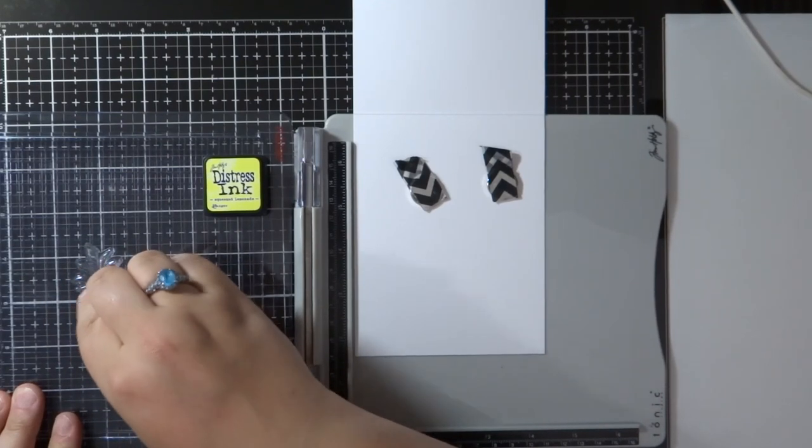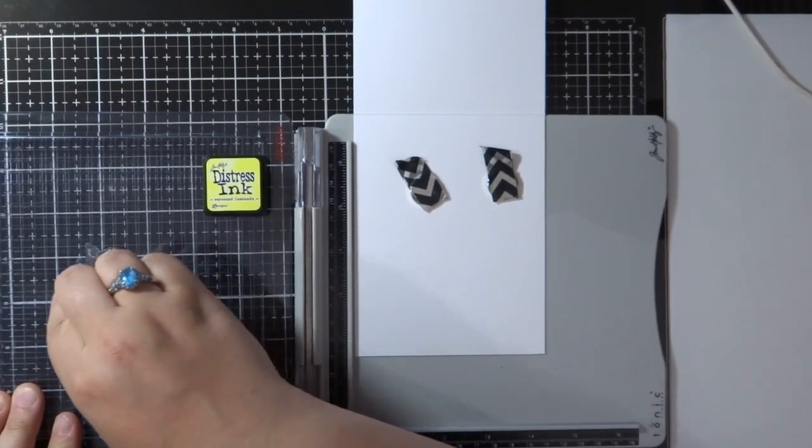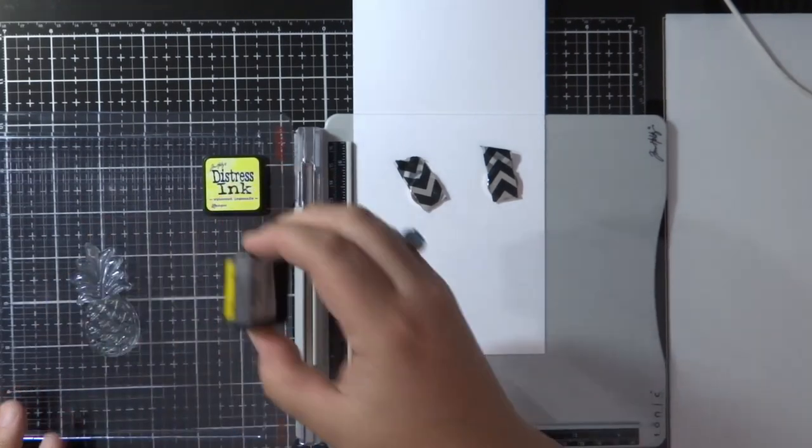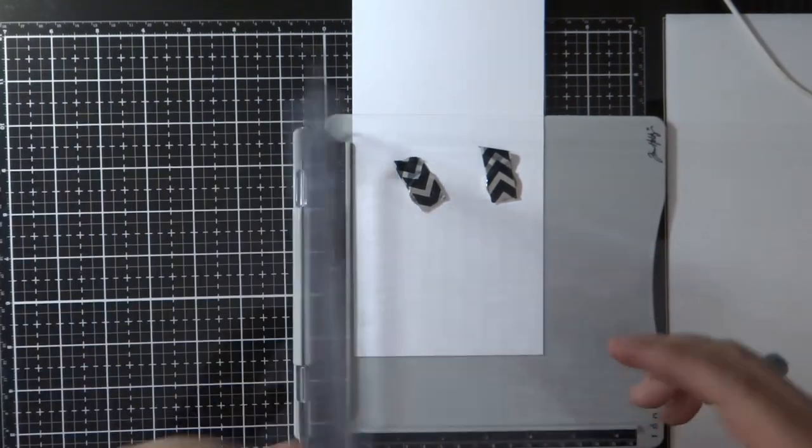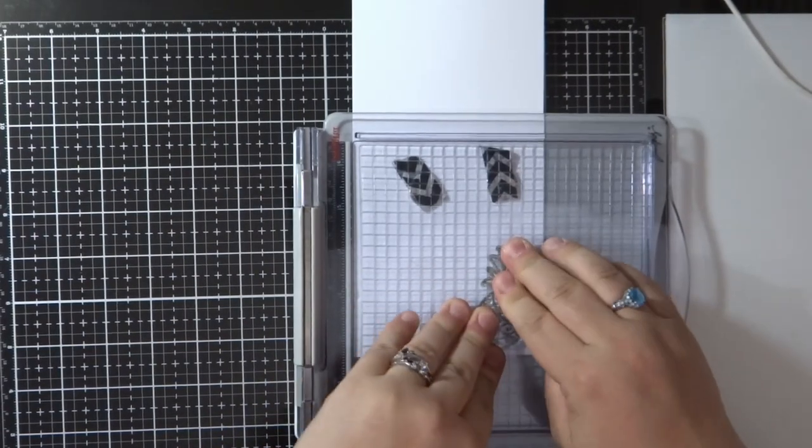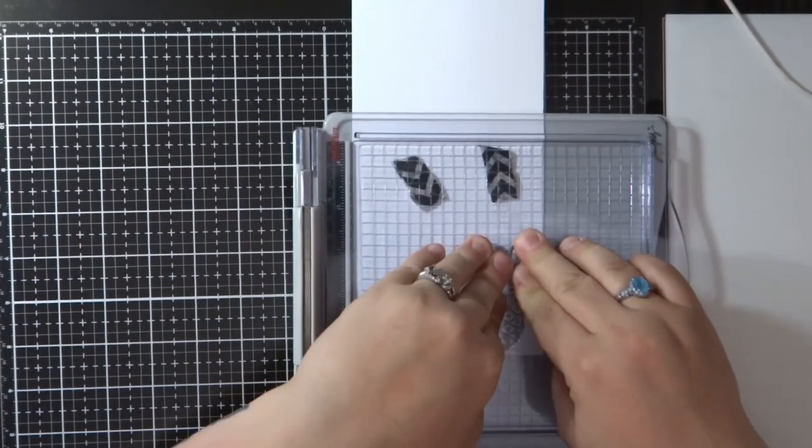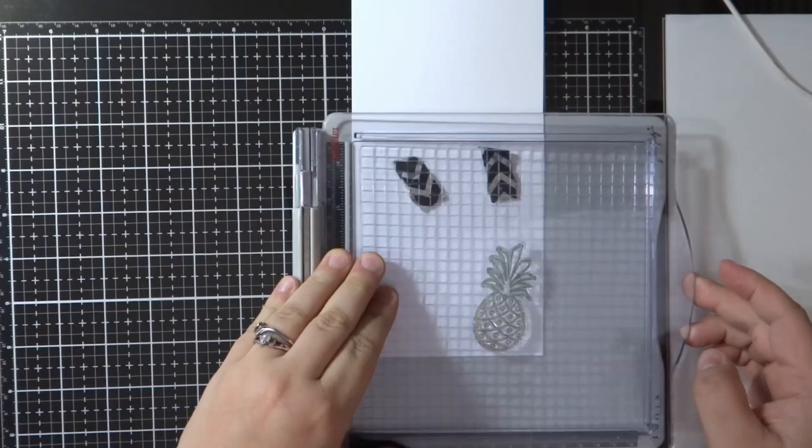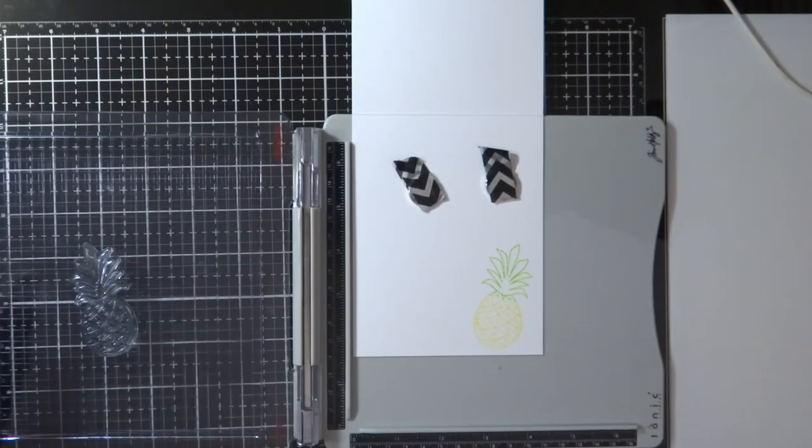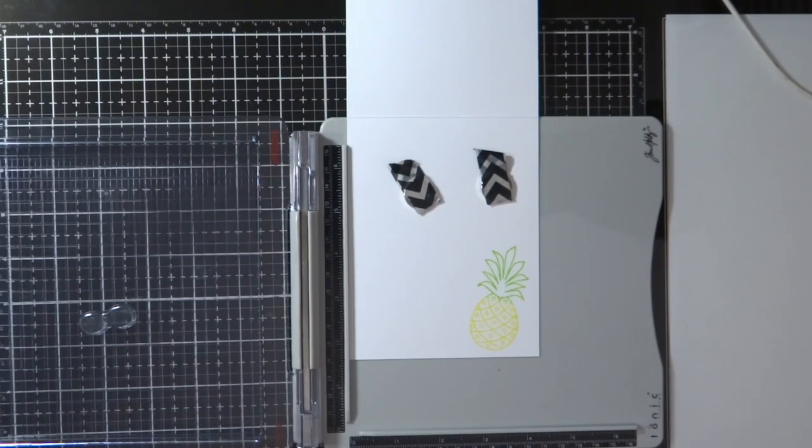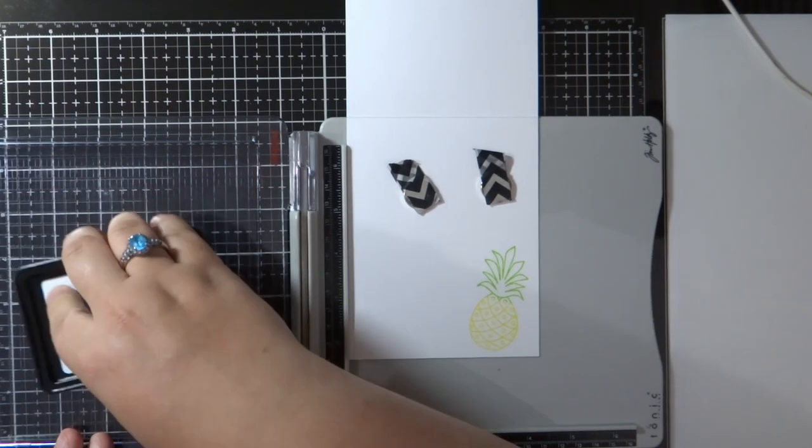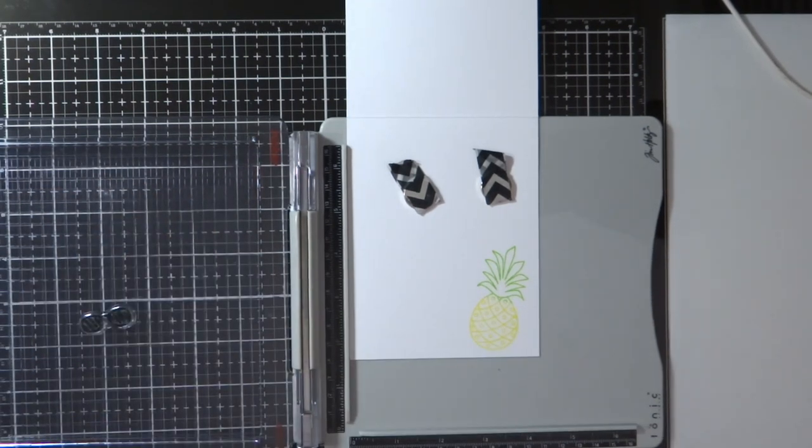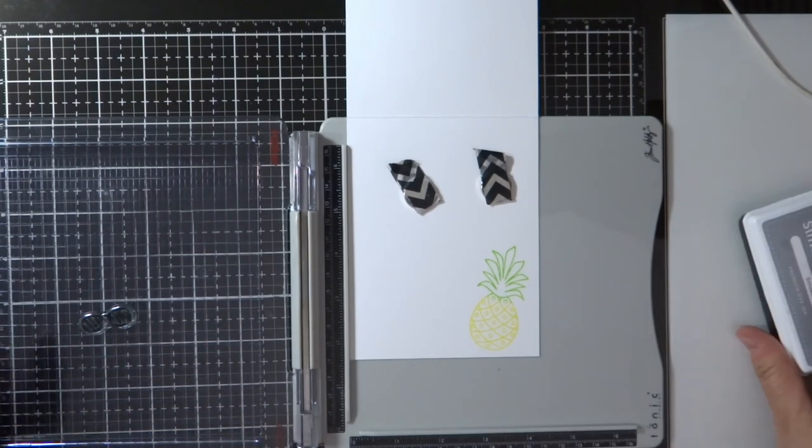For the inside, I'm going to do a quick on stamp ink blending with the distress inks, the same colors I used on the front of the card. And I stamped the base of the pineapple in yellow and then the crown part in green. I did stamp that a couple times too. You can kind of see that it is darker.